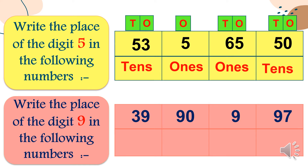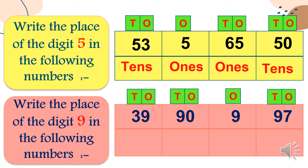Write the place of the digit nine in the following numbers. We have thirty-nine, ninety, nine, and ninety-seven. Thirty-nine: nine is in the ones place. Ninety: nine is in the tens place. Just nine: nine is in ones. Ninety-seven: nine is in the tens place.